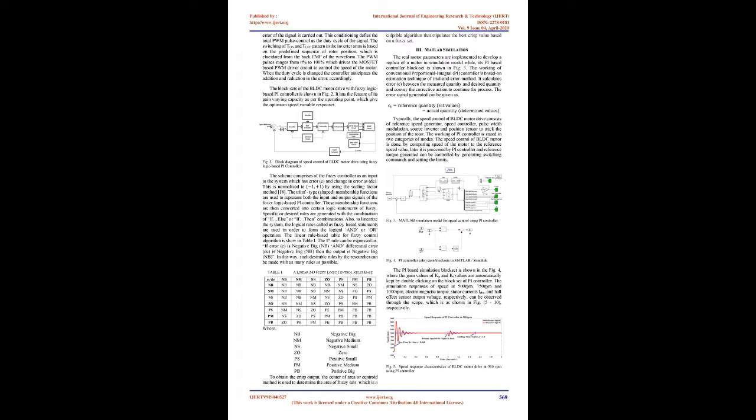Closed-loop control scheme of BLDC motor drive: Fig. 1 shows the block diagram of speed control of BLDC motor drive using PI controller. The PI controller-based block sets are shown in Fig. 1. As the input is set to reference speed, the PI-based controller receives set speed and actual speed, bringing up the differential error to manipulate in the PI controller block. This controller block sets certain gain values and directs towards the pulse-width modulator. The speed calculator brings up the negation of actual speed, which minimizes the error.